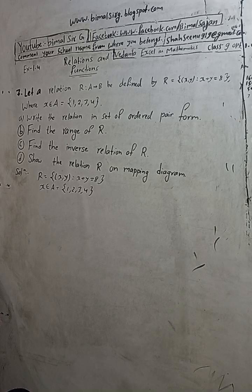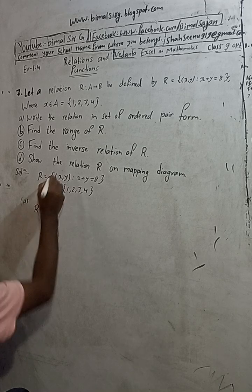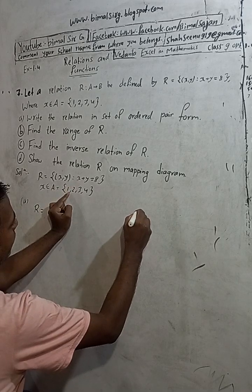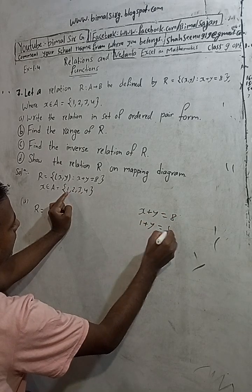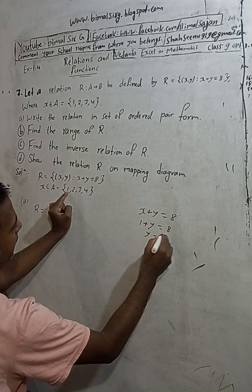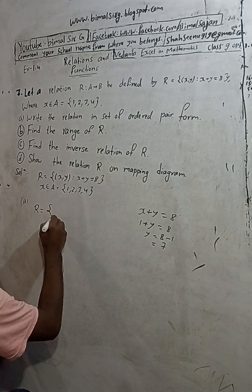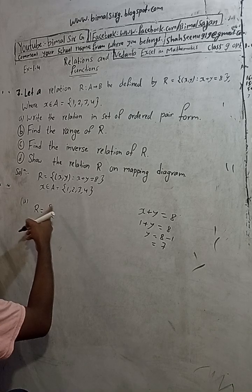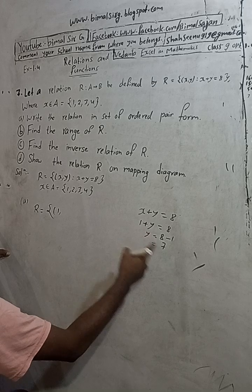To write the relation in ordered pair form: x belongs to A, so we take each value of x. If x equals 1, then y equals 8 minus 1 equals 7. So we write the ordered pair (1, 7) in the relation using small brackets with a comma.